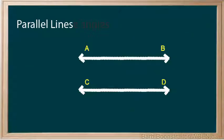Parallel lines are two lines that do not meet. They are always the same distance apart. Parallel lines are written as AB is parallel to CD.